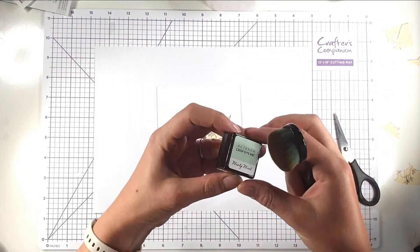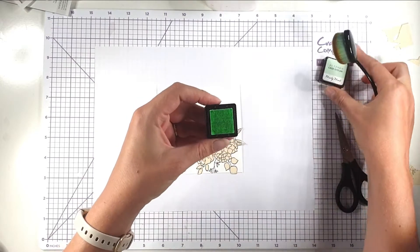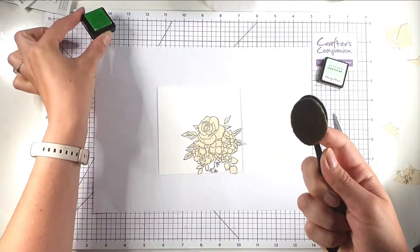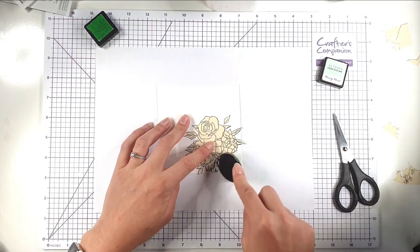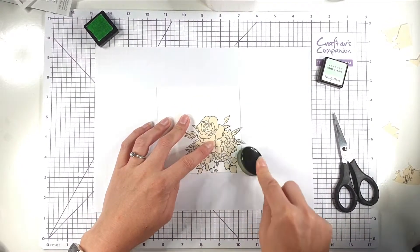So I'm going to do some ink blending, so I've got this minty mint from Altenew first. I'm just rubbing on in a circular motion and then I'm just going to go over this bottom part with this colour.